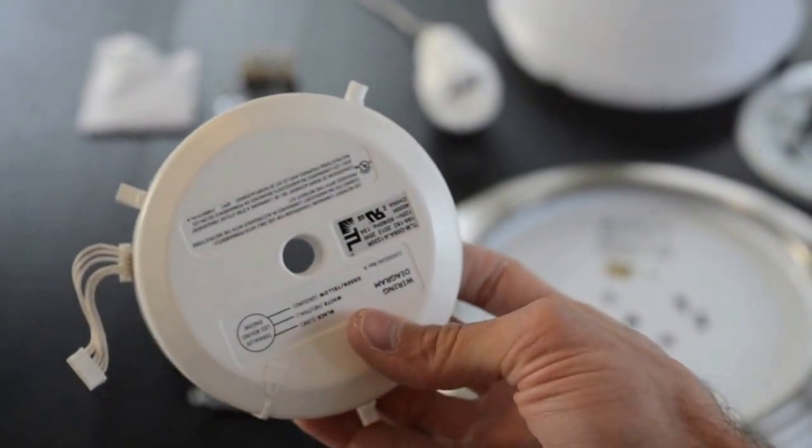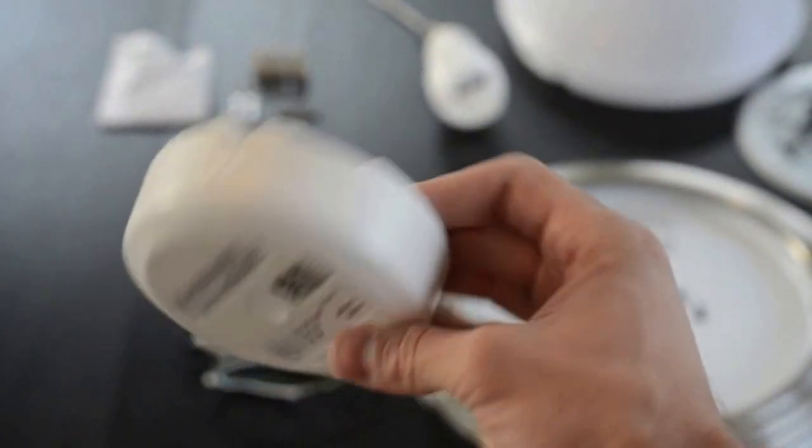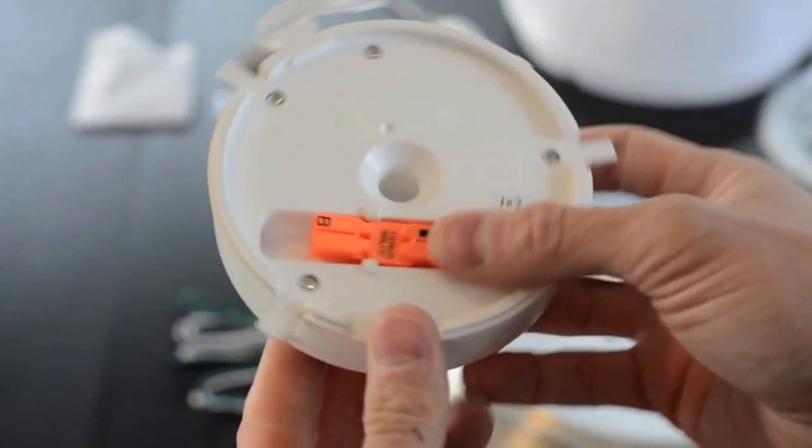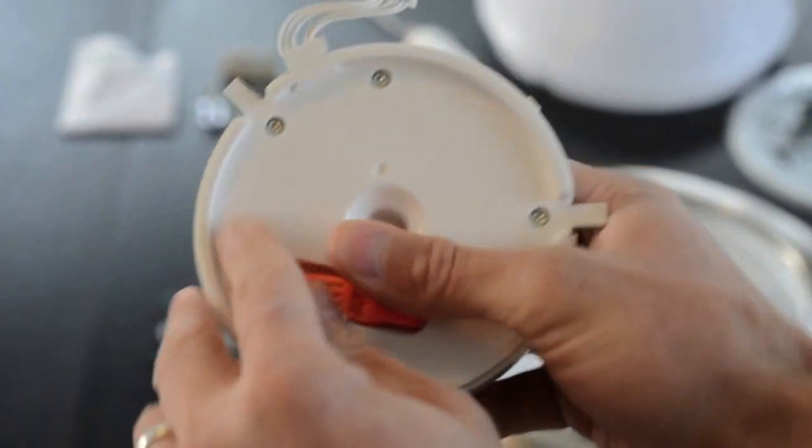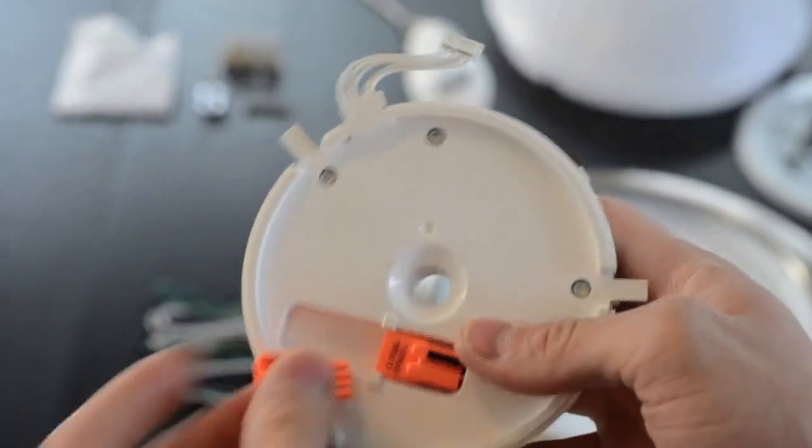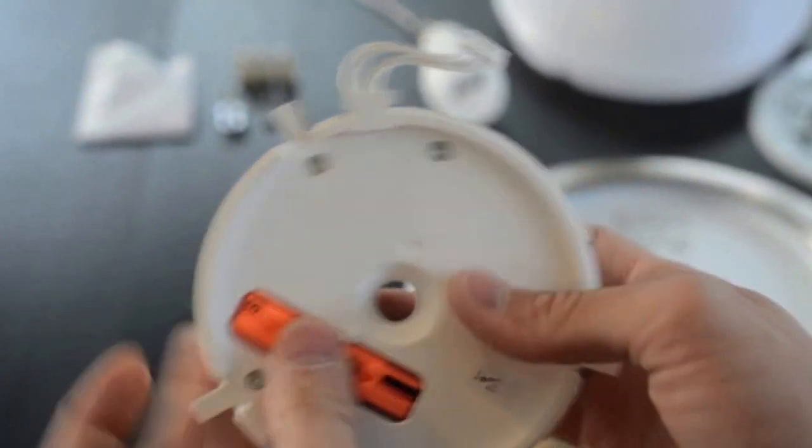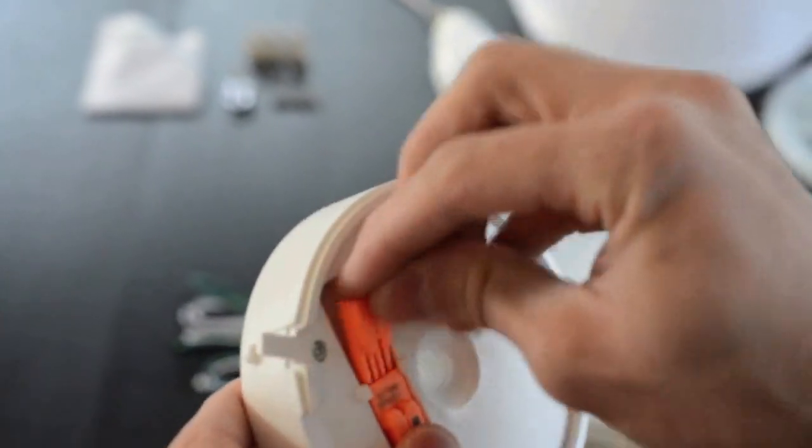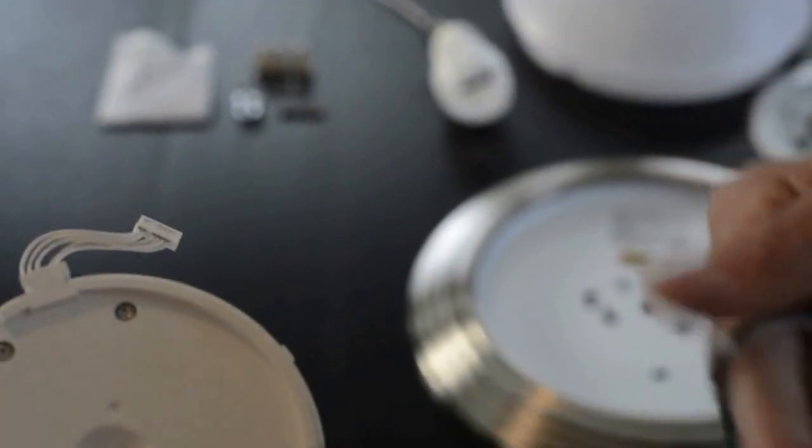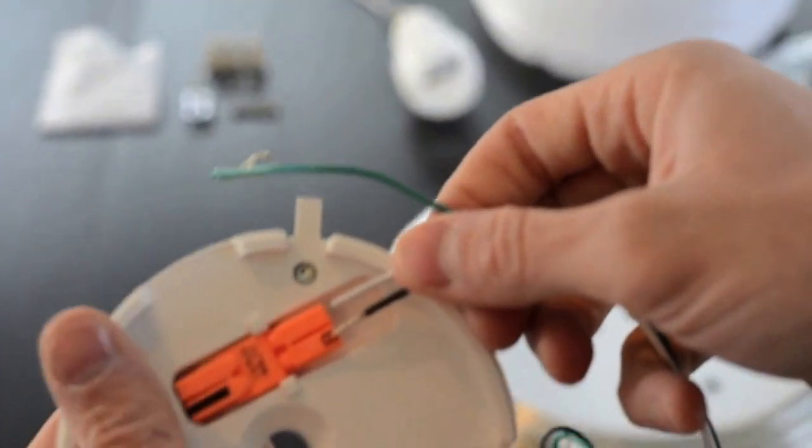The first step to this installation is connecting the wiring harness to the LED driver. On the back of the LED driver is a connector which will allow you to press in the wires and disconnect them quickly for ease of installation. We suggest leaving this connector connected and pressing the wires from the wiring harness into this connector. B is for black.